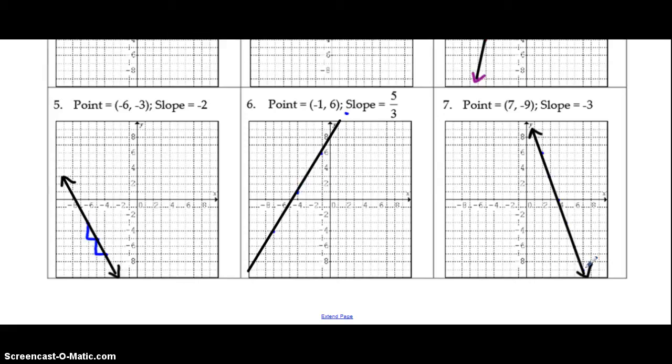Same happened over here, 7, (-9). If you went down 3 over 1, we end up off the graph. So, we had to extend in the opposite direction by reversing our instructions. So, hopefully you're good with graphing lines. That's your video for today.